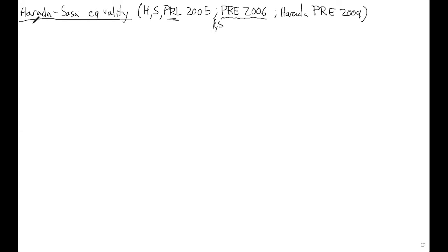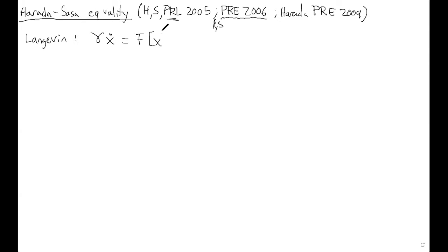I will show an equality for Langevin dynamics, though this can be generalized to more situations — recently there has also been a generalization to field theories. I start with an overdamped Langevin system. There is no mass. There is friction from the bath, an external force which could be conservative and non-conservative, then a perturbation epsilon F_p, which is a time-dependent force. Epsilon is a parameter we say is small. Finally, there is a white noise for the thermal bath.